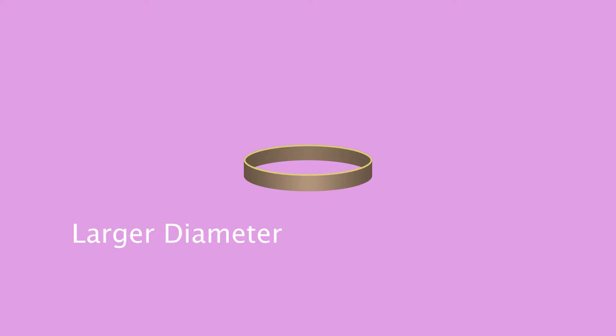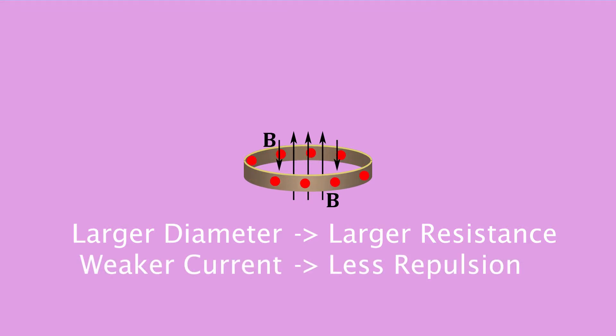The larger diameter ring has the same magnetic field flowing through it but it's a larger resistance, so ultimately the total force on this ring is smaller and it is also heavier.